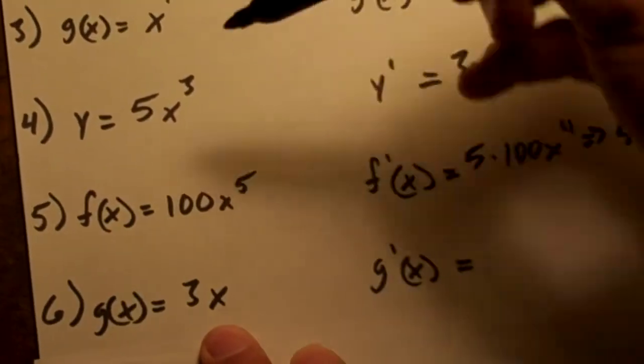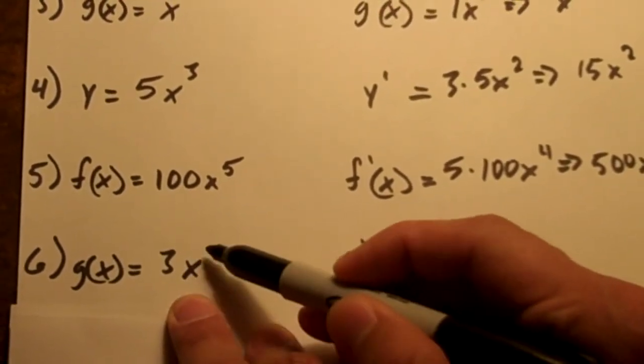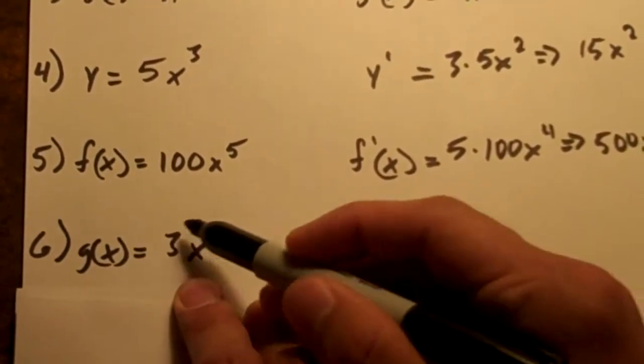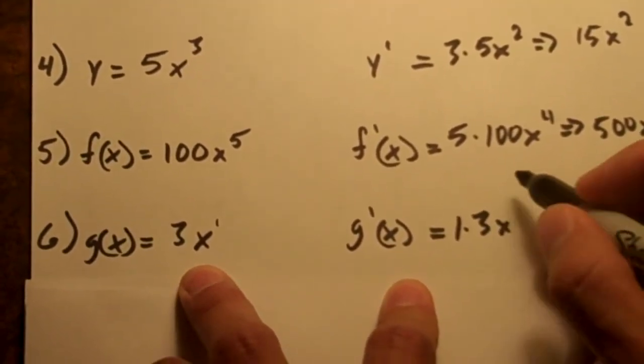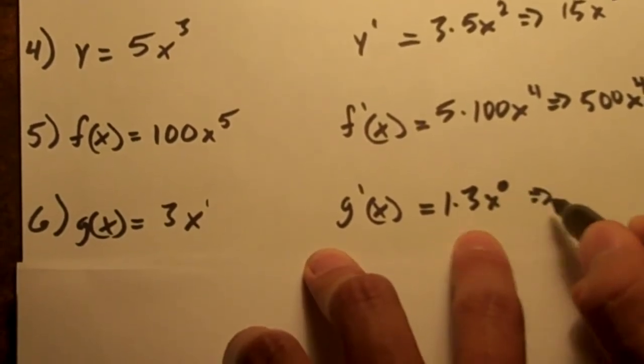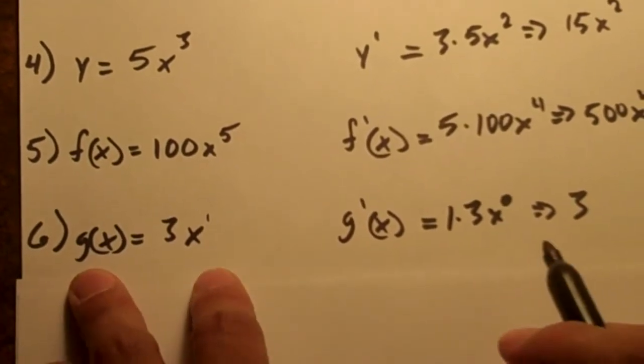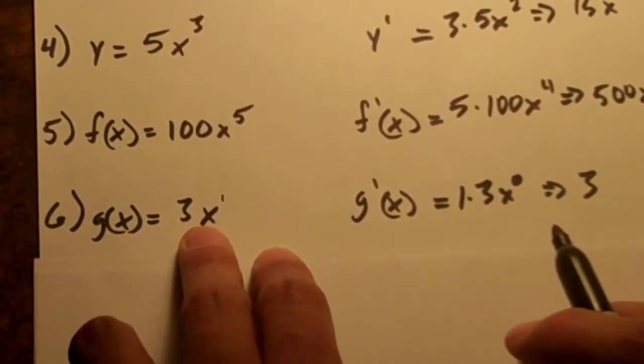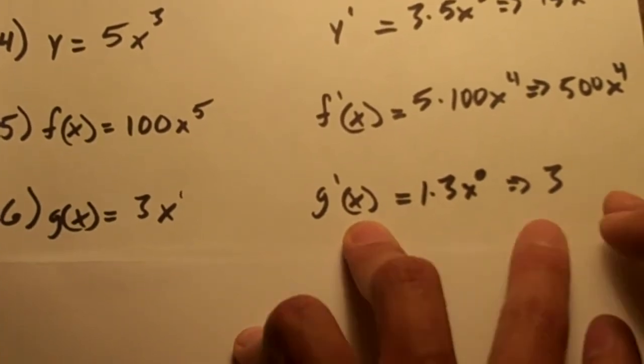Same sort of thing as we did up here when we did just x to the 1. This is the same thing, kind of like 3x to the 1. Take the 1 and multiply it out front. And then 1 minus 1 is 0. 1 times 3 is 3 and x to the 0 is 1. So you're just left with 3. The derivative of g of x equals 3x is g prime of x equals 3.